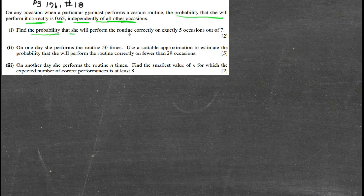Find the probability she'll perform the routine correctly five out of seven times. So we've got trials and a hit or miss kind of situation, two outcomes: either she does it correctly or she doesn't. So this seems like it's going to be a binomial situation.